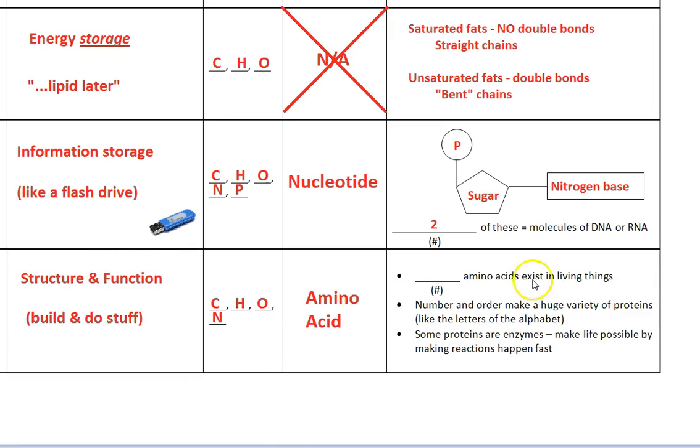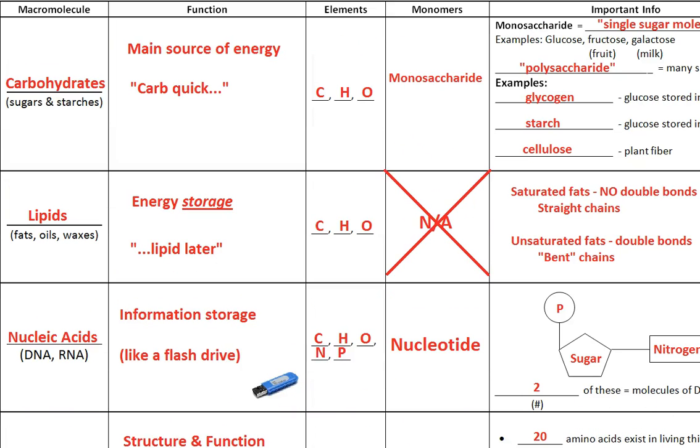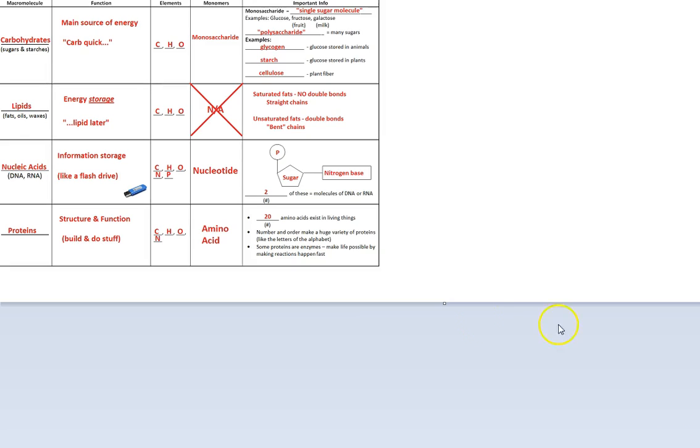And finally, on down to amino acids. There are 20 amino acids that exist in all living things, and that number and order make a huge variety of proteins. Some proteins are enzymes, and they make life possible by making reactions happen fast. So this is that for the table there. Make sure you have that all copied.